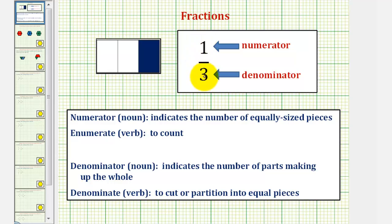A fraction is in this form where the top number is called the numerator and the bottom number is called the denominator. The denominator is a noun and indicates the number of parts making up the whole, though there is a verb denominate which means to cut or partition into equal pieces. The numerator, which is a noun, indicates the number of equally sized pieces. There is a verb enumerate which means to count.